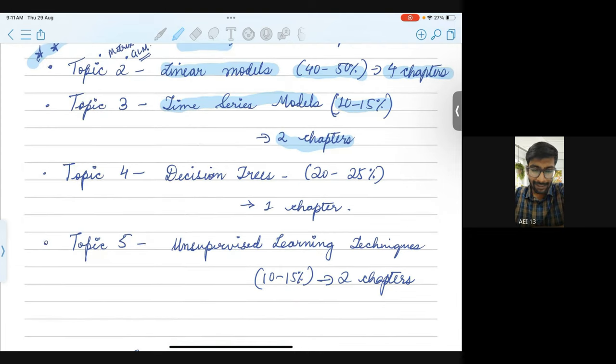Then, next topic is your decision trees. This is very important. If you look at this, it is only consisting of 1 chapter which is also not too long and the weightage is quite high. You can expect a lot of questions on this particular chapter on decision trees.